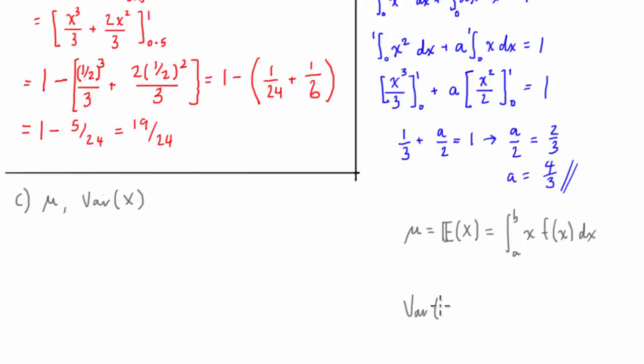Now our variance can only be done once we've calculated our mean because the variance again is the integral on the domain of the continuous random variable of x minus the mean or the expected value squared times the function of x dx. Cool, so those are our two formulas that we're going to need for this last part c of our question. So let's get to it.